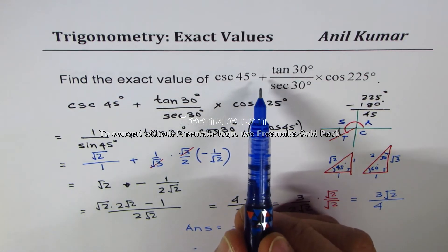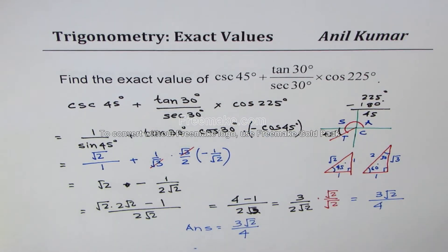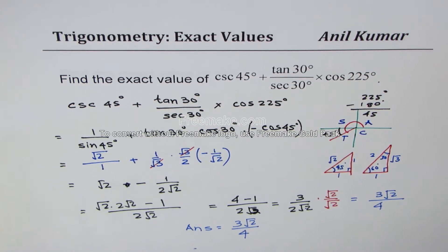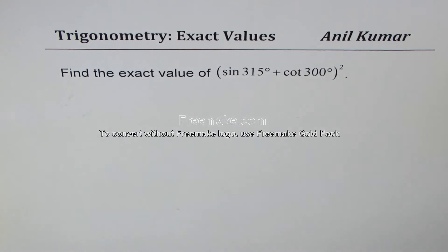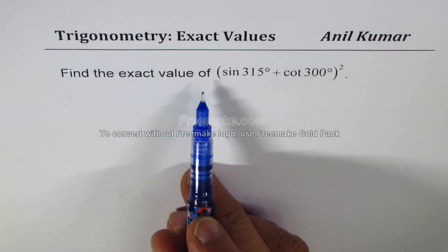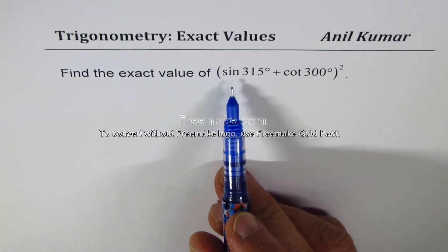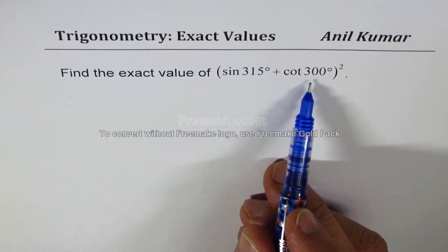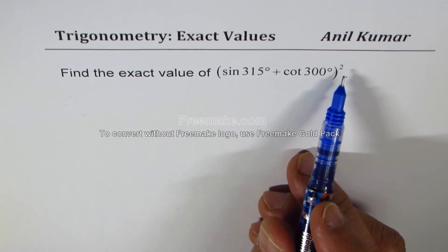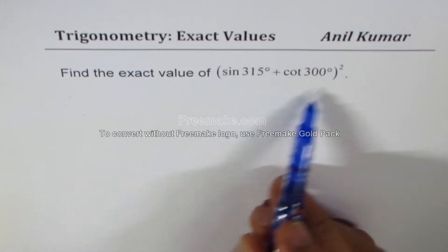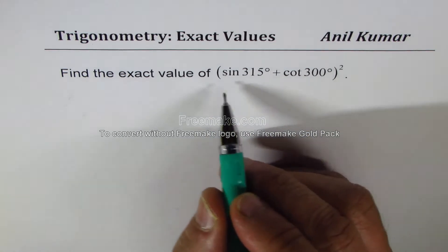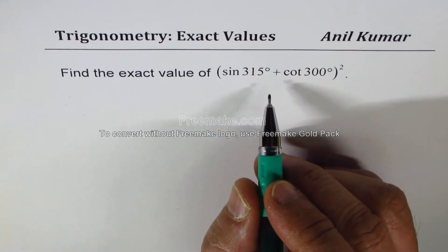Gurmeen, I changed the question a bit — I made it positive instead of negative. Let's go to the next question: find the exact value of sine of 315 degrees plus cotangent 300 degrees, whole squared. Let's find the exact value for this trigonometric expression.